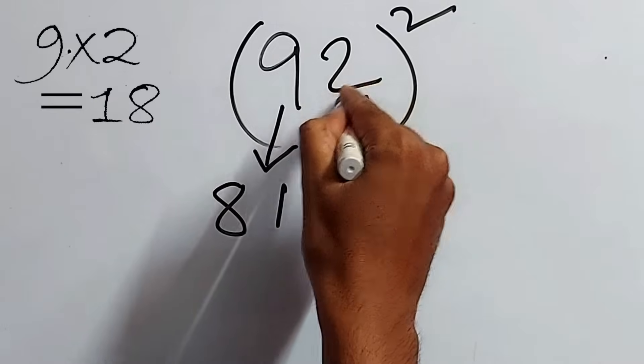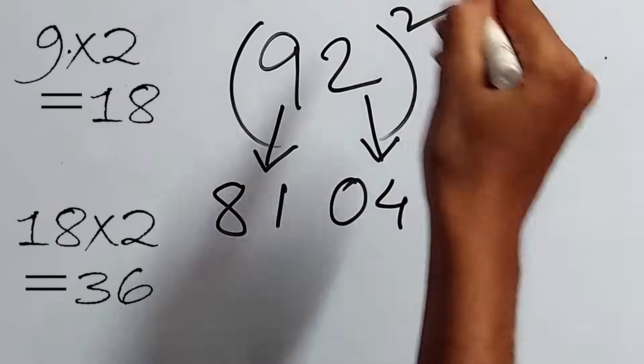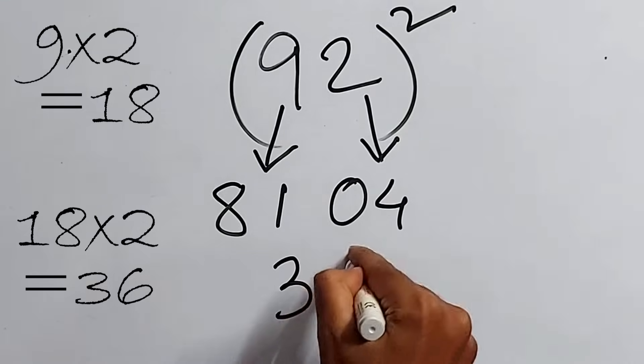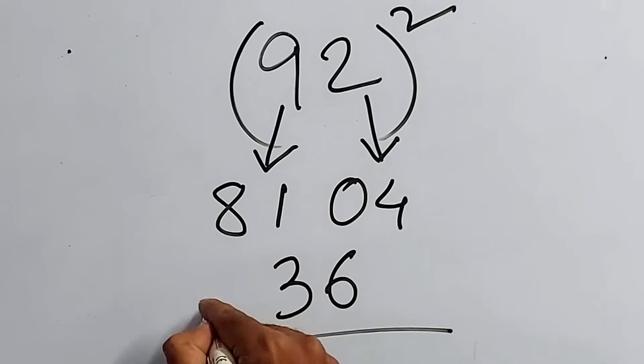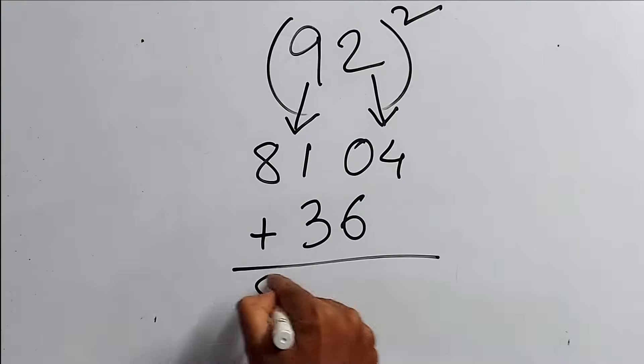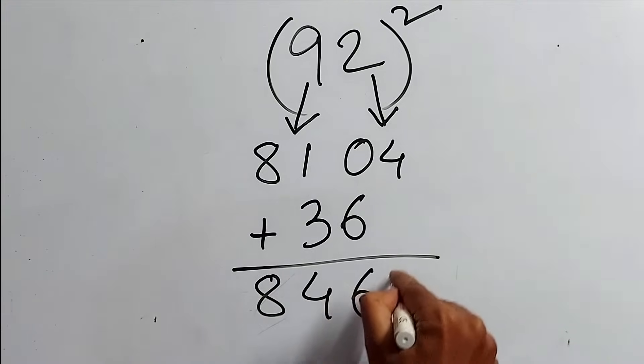Now, again, 9 into 2, that is 18. 18 into 2 is 36. Just write 36 here. Again, that's it. Just add this 2 and you'll get 8, 4, 6, 4.